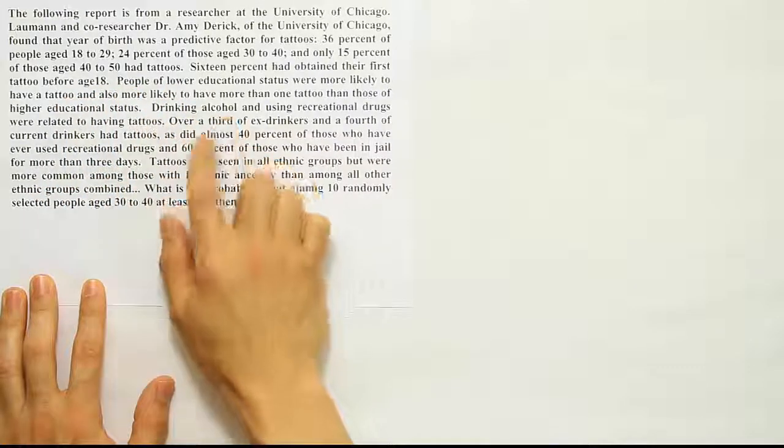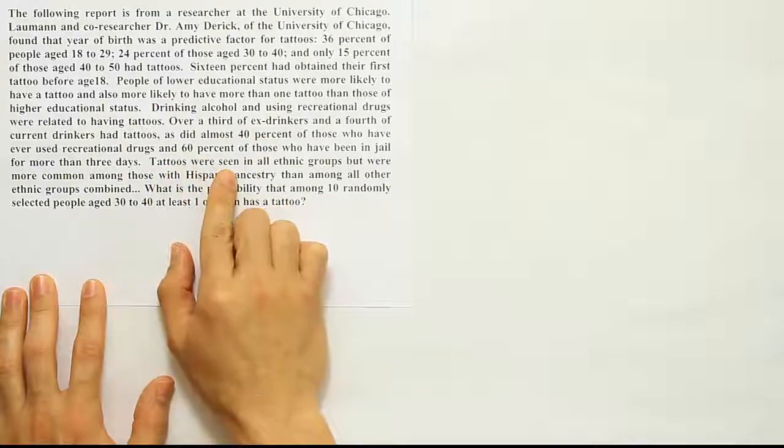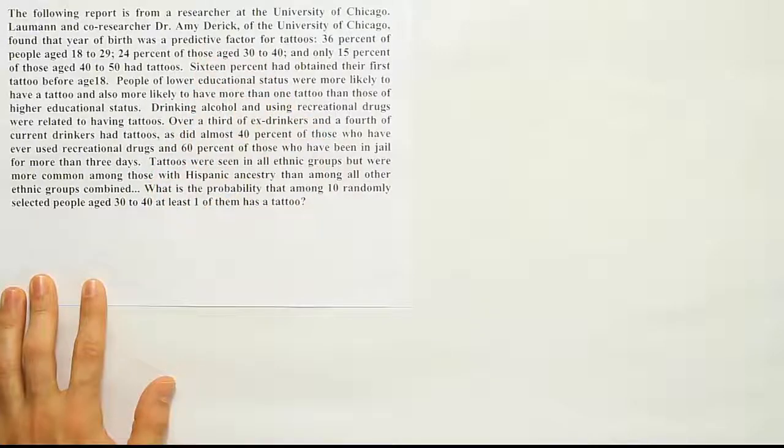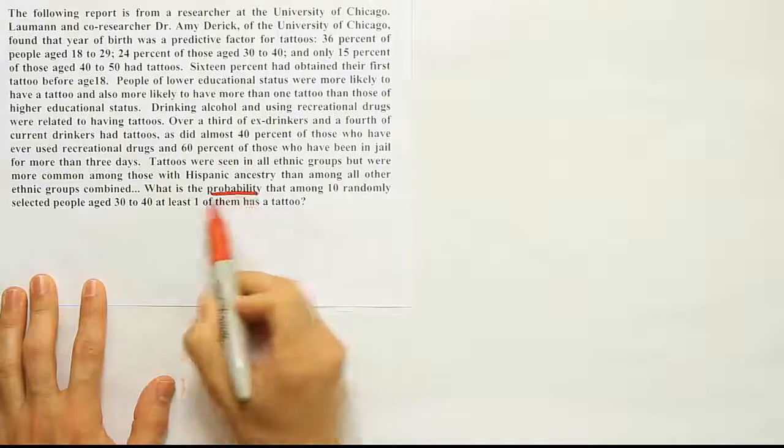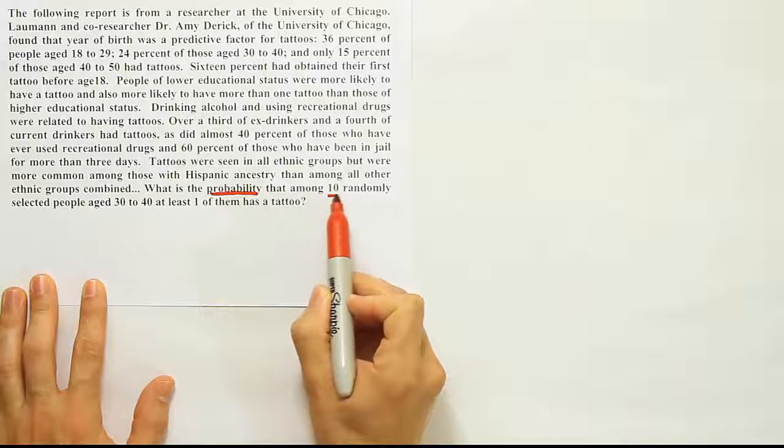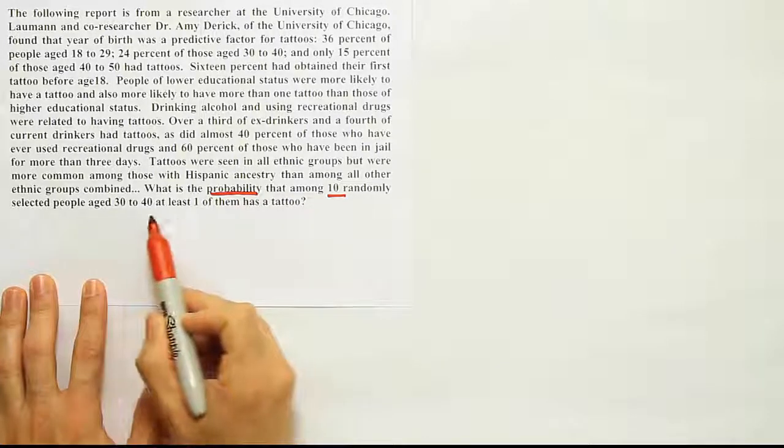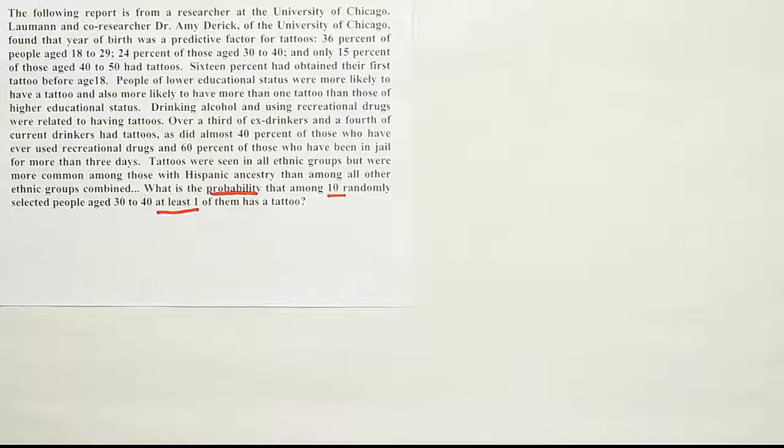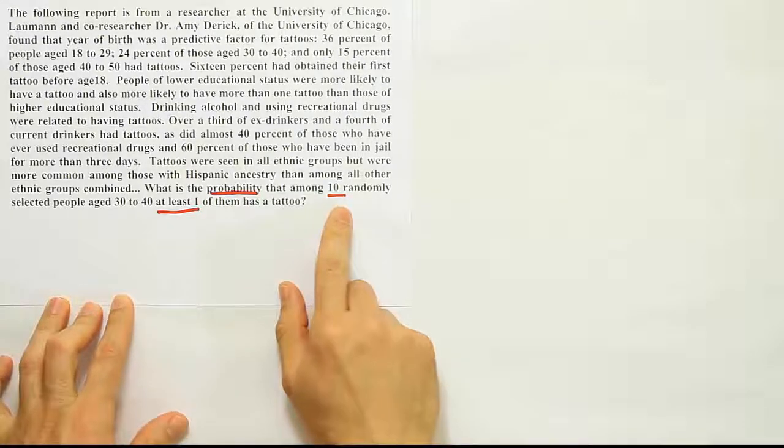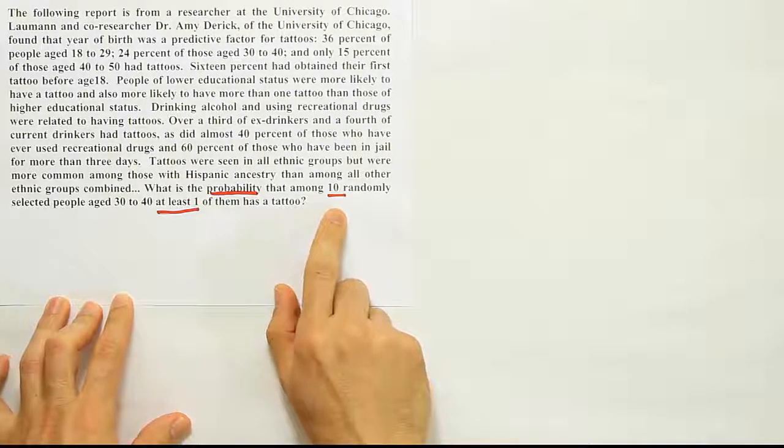Okay, so you can read the rest of this on your own. It's just some more descriptions about the data that was collected by these researchers, but the most important part here is the part that says: what is the probability that among 10 randomly selected people aged 30 to 40, at least one of them has a tattoo? So this information and the problem, or those key phrases that I've underlined, indicate to me that this is a probability of at least one problem.